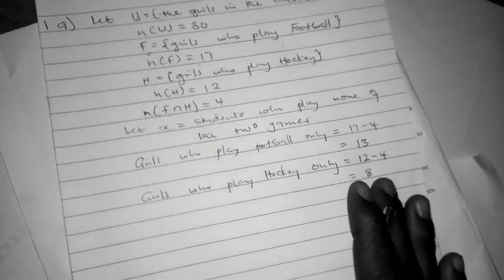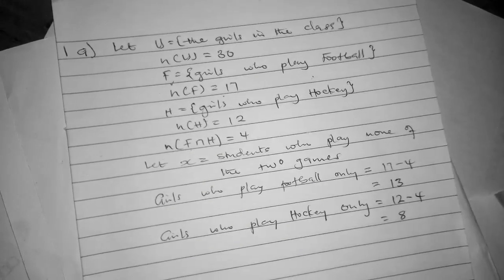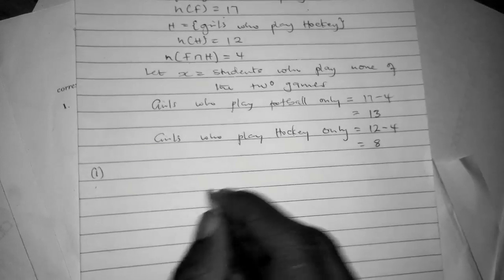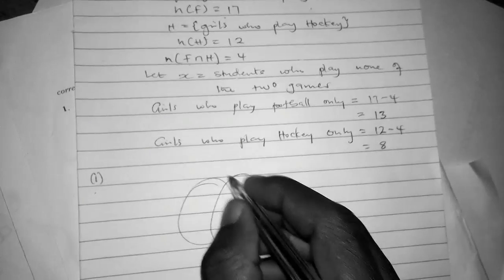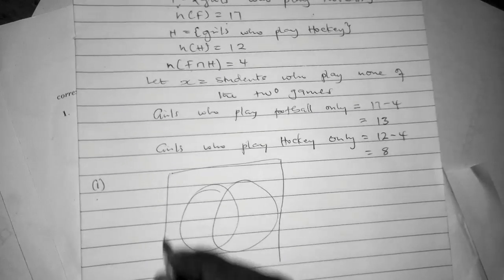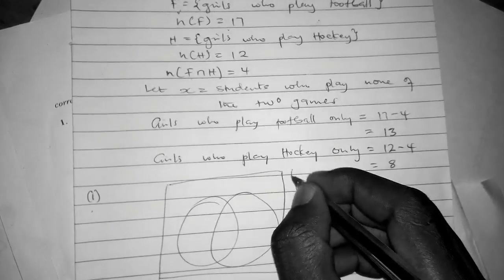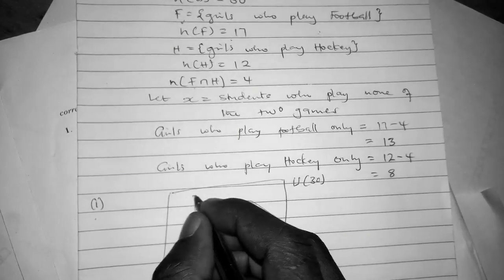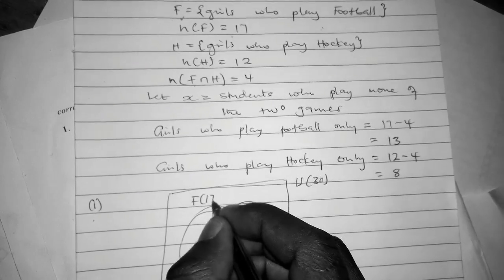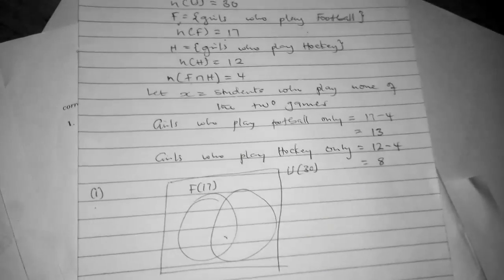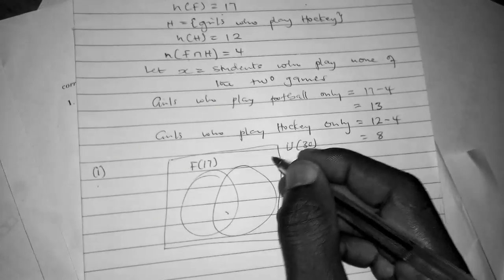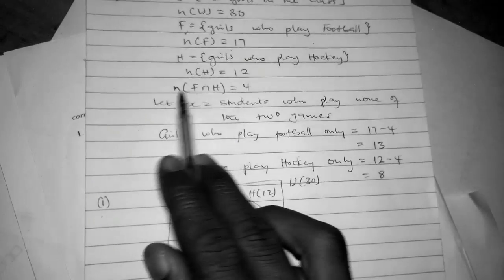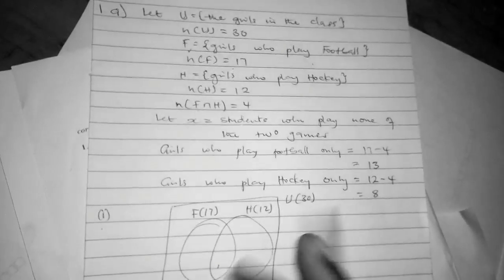Now let us draw a Venn diagram. I need two circles. My universal set will be the rectangle, and F is football (17), and H is hockey (12). This portion is F ∩ H.